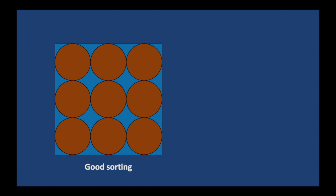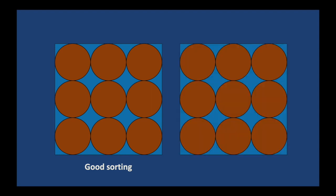Porosity is the ratio of void spaces to the total volume. In the well-sorted sediment on the left, all the particles are of similar size and we can expect quite a high porosity. If the sediment is poorly sorted, it means that the particle sizes are mixed and the finer material will fill up the pore spaces between the larger material. This will reduce the overall porosity, as you can see here on the right.